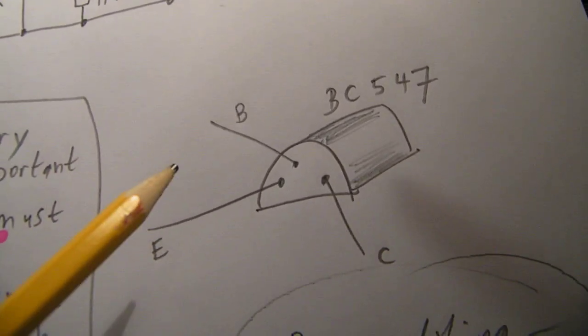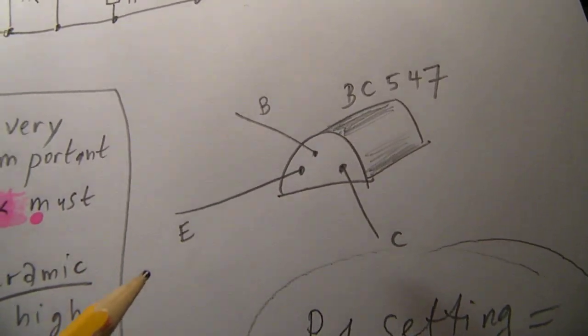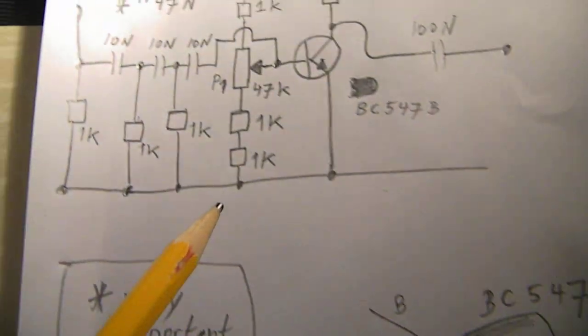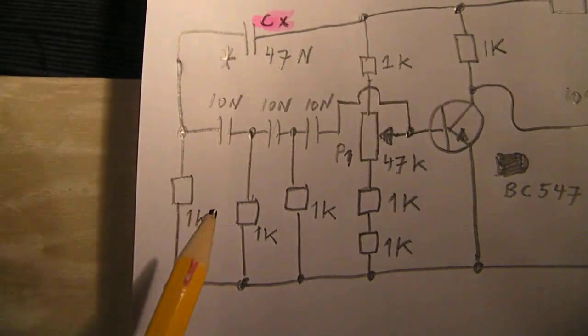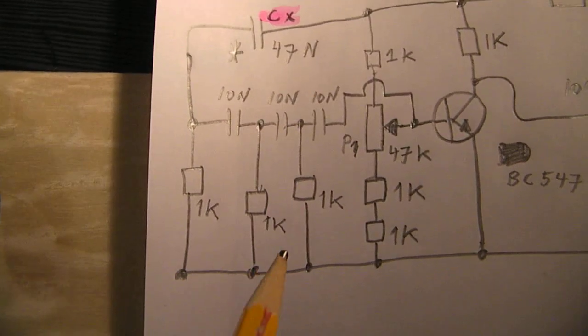That's also necessary in such a circuit and the phase shifting network. All these resistors are 1k, 1000 ohm.